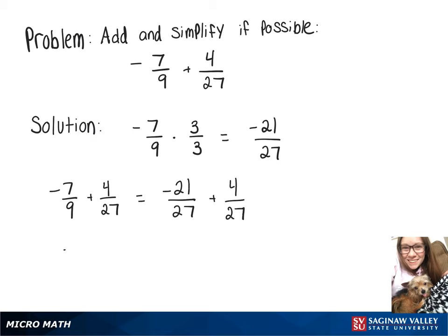We can turn that into negative 21 plus 4 over 27, giving us our final answer, negative 17 over 27.